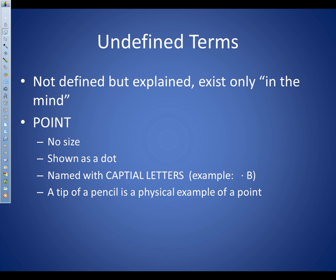Our first undefined term is the point. It's an undefined term because there's no such thing as an actual point — it's an idea, it exists only in our mind. There are things that are like points, but there aren't actual points. Facts and characteristics: it has no size, and it's shown as a dot.